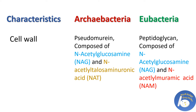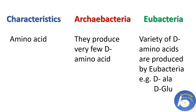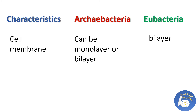The next characteristic is amino acids. Archaebacteria produce very few D-form amino acids, while Eubacteria produce a variety of D-amino acids. Next feature is cell membrane. In Archaebacteria, the cell membrane can be a monolayer (single layer) or it can be a bilayer (double layer), while in Eubacteria the cell membrane is always a bilayer.